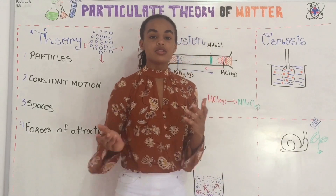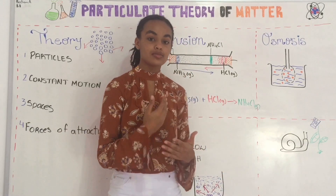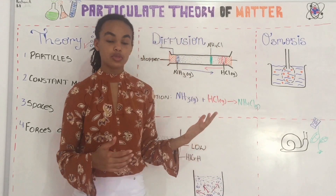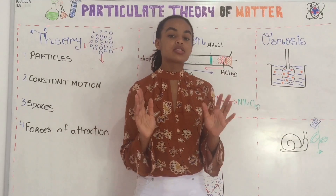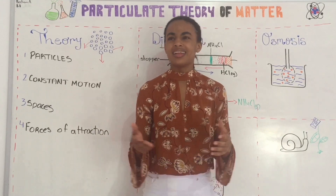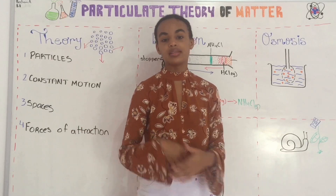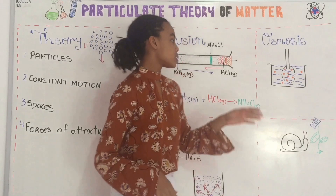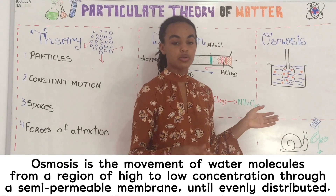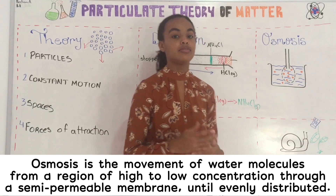Osmosis. Now osmosis is very similar to diffusion but there's a big difference. We say osmosis is the movement of particles from a region of high concentration to a region of low concentration, but this happens through what we call a semi-permeable membrane. A semi-permeable membrane acts like a filter — it allows some particles to come through and some not to pass through. So osmosis is the movement of particles from a region of high concentration to a region of low concentration through a semi-permeable membrane, like a barrier, until evenly distributed.